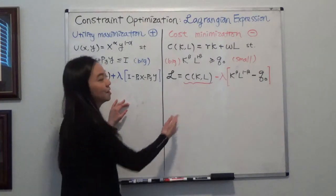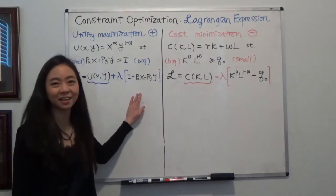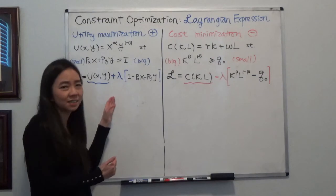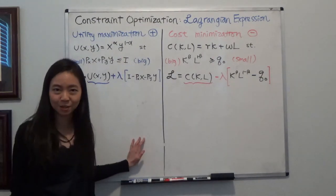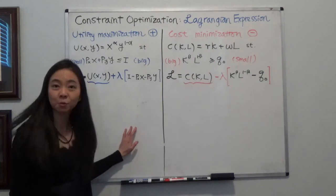That's how you set up your Lagrangian. And in the future, I hope you don't get confused about, should I do plus lambda or minus lambda? That depends on whether you're trying to maximize or minimize. I hope this helps. We'll see you next time.